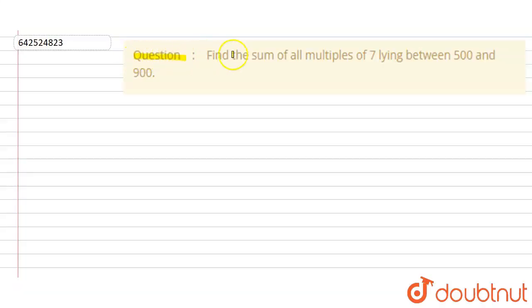Hello everyone, so we have a question given. Find the sum of all multiples of 7 lying between 500 and 900. Coming to the solution, what we need to do, we need to find the sum of all multiples of 7 lying between the range 500 to 900.